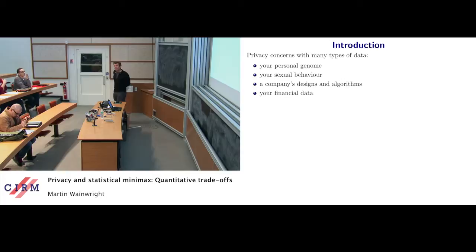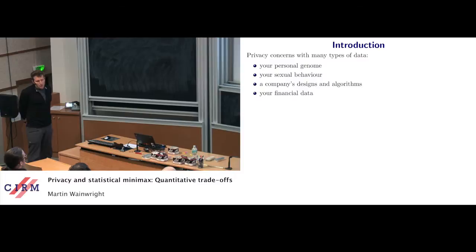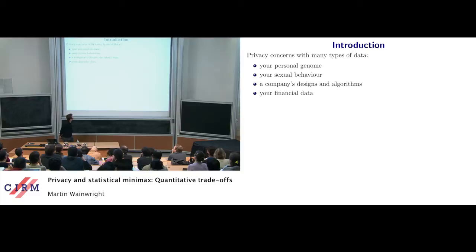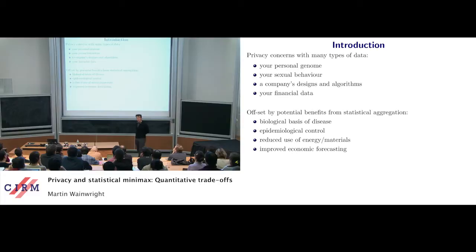We're collecting many types of data: data on your genome, on your genetics, on your sexual behavior, on your financial data for individuals. If we think about companies, you can imagine they have designs, chip designs, and algorithms — we can collect data on those as well. There are obvious privacy concerns with all of these types of data, but at the same time, if we're allowed to collect and aggregate this data, there's certainly a lot of potential benefits.